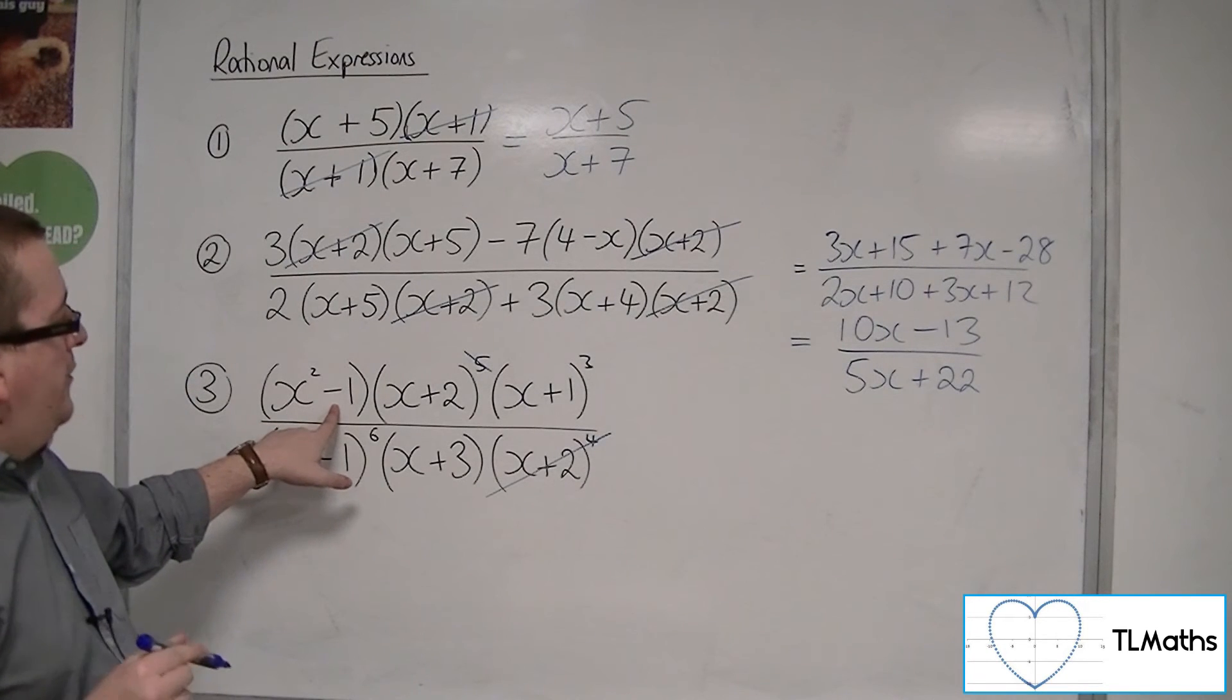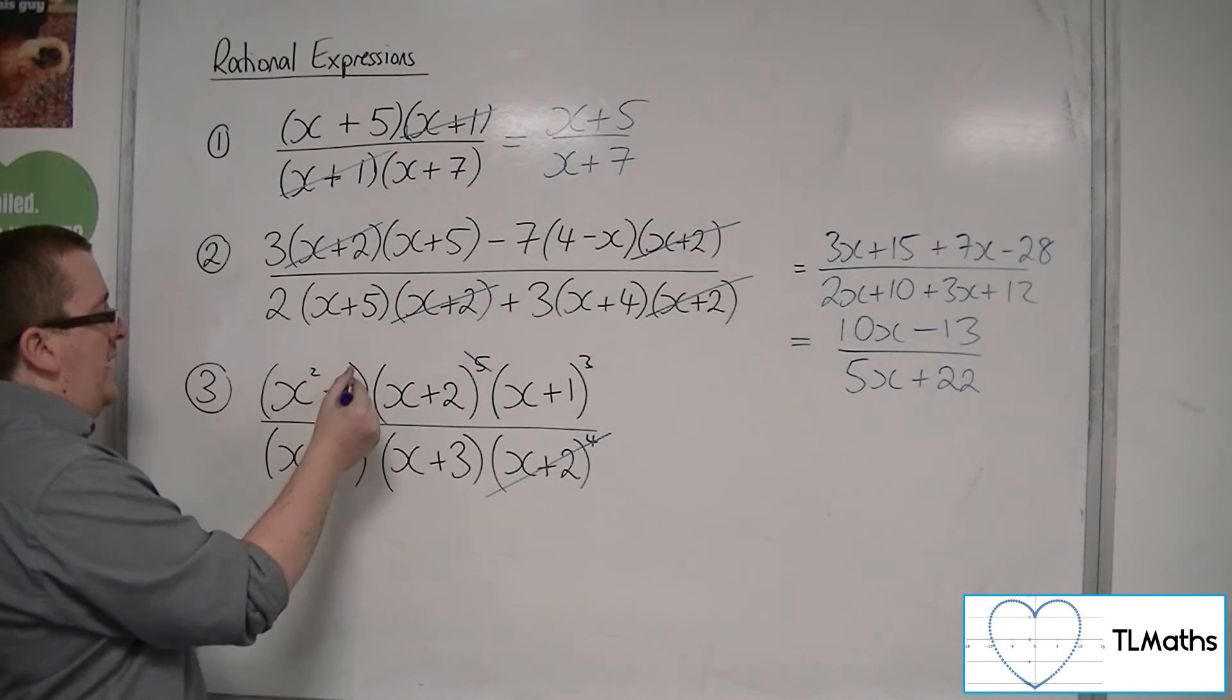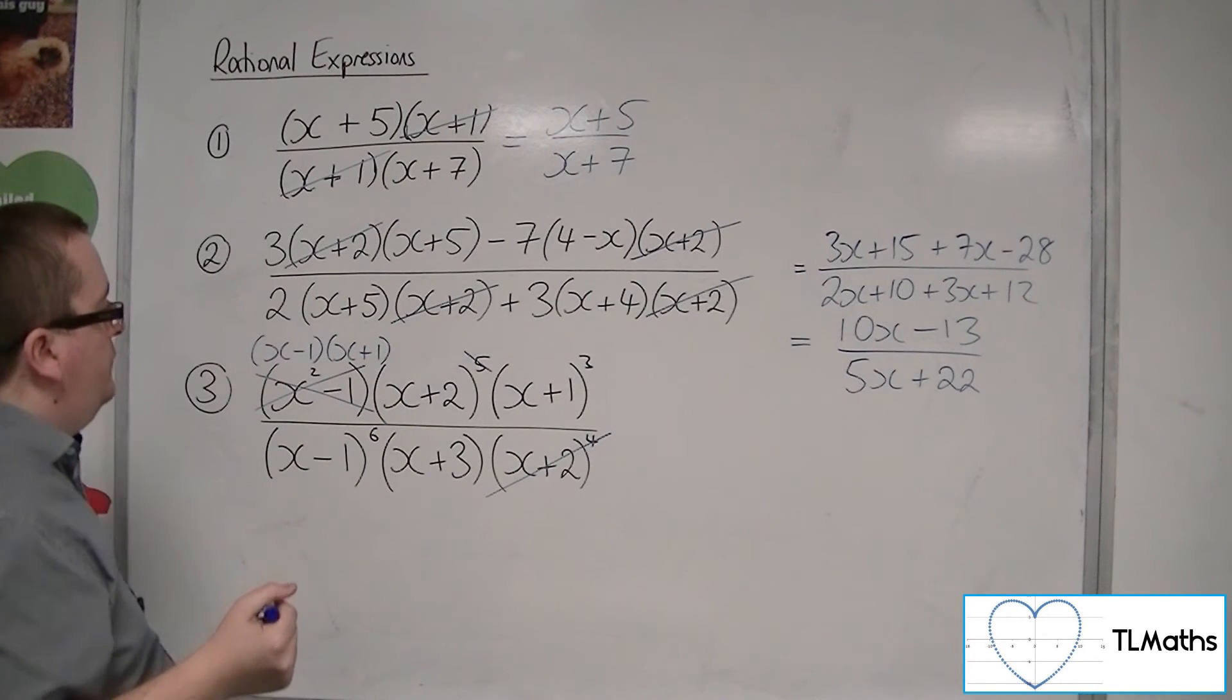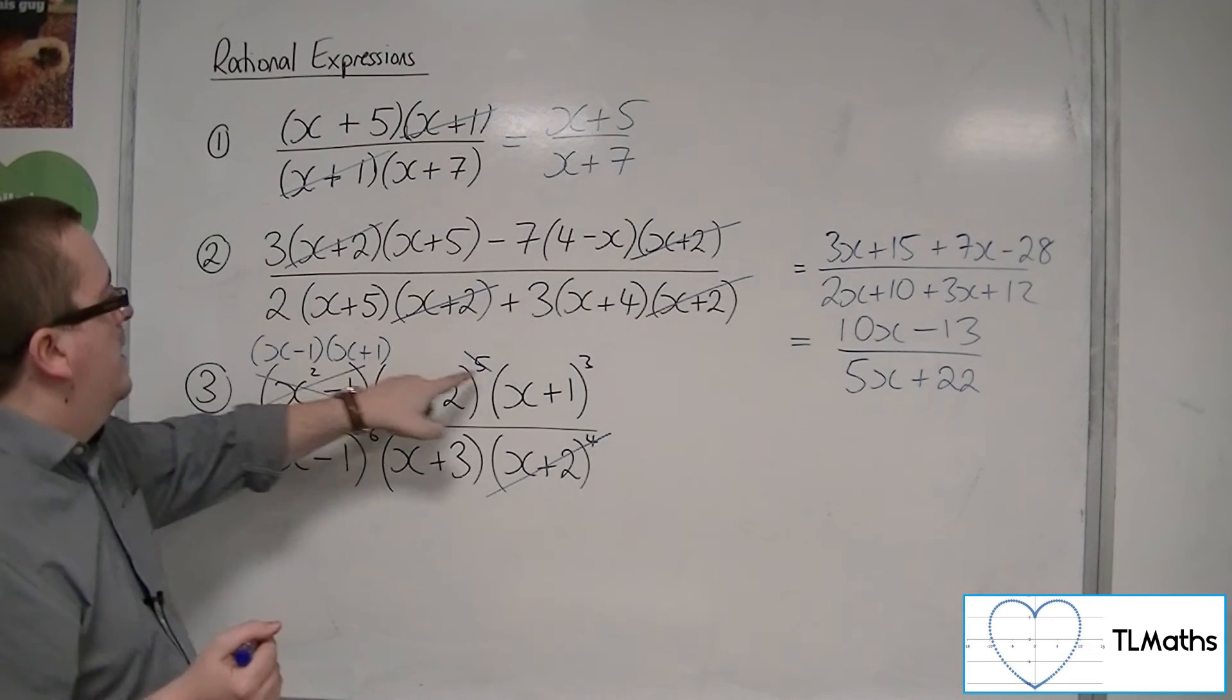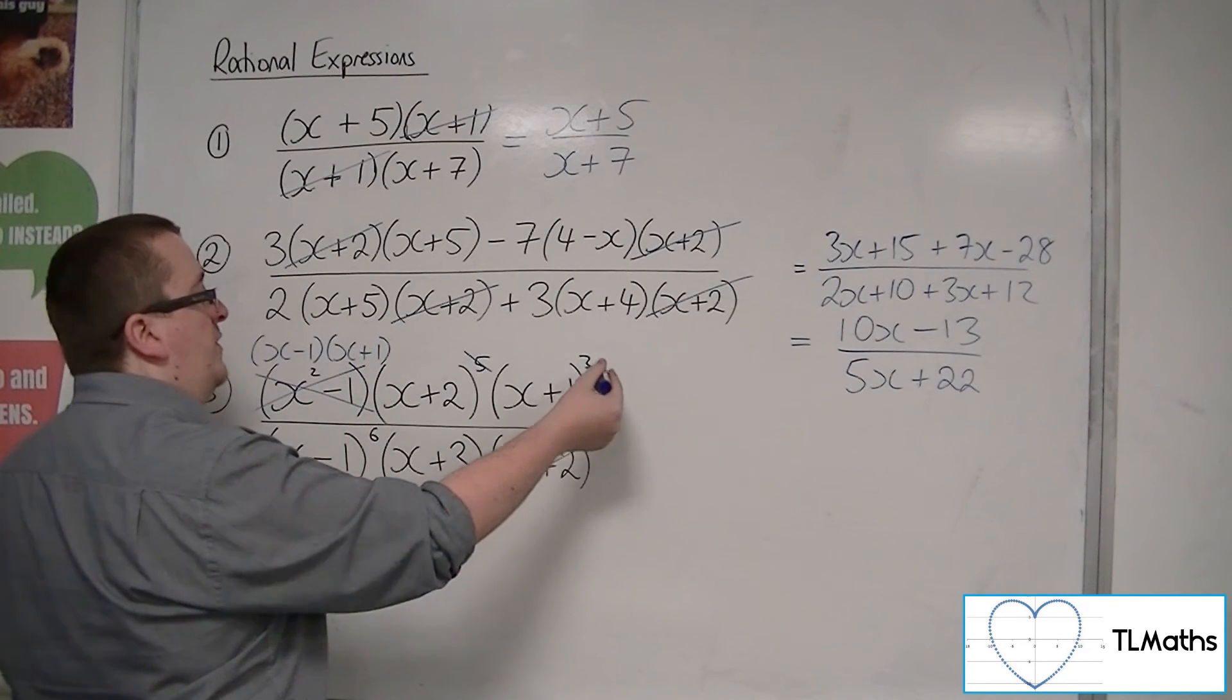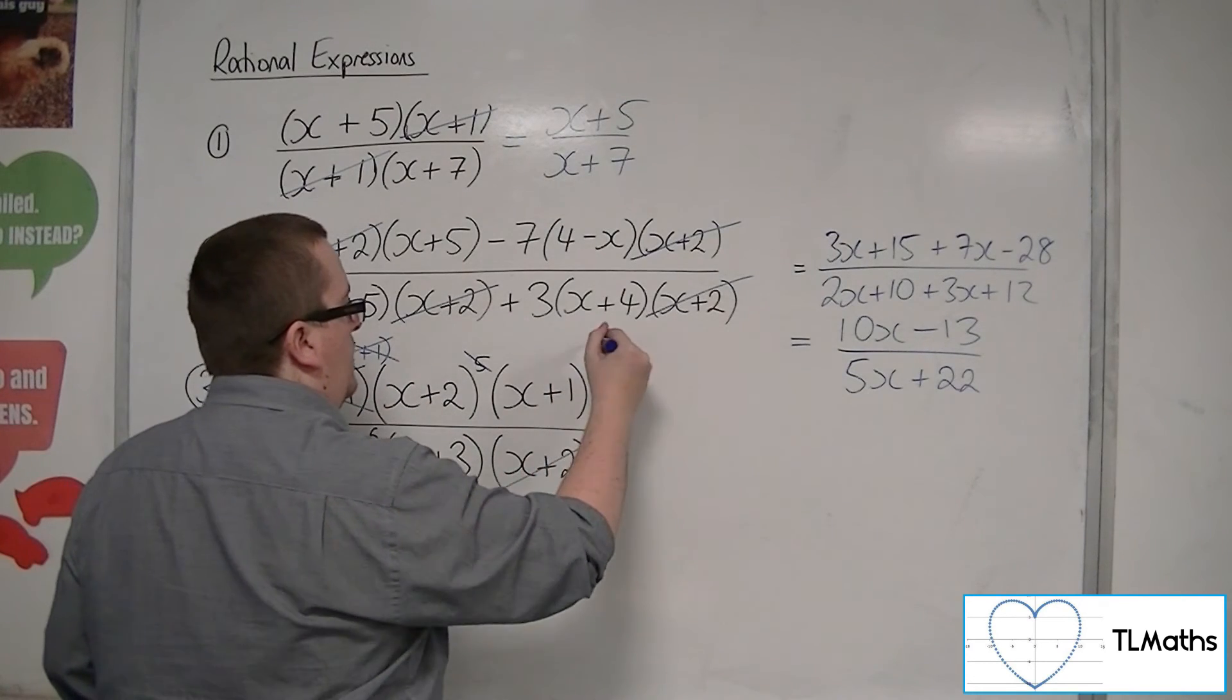Now, the x squared minus 1, that is the difference of 2 squares. So, I can actually rewrite that as x minus 1, x plus 1. So, I actually have x plus 1 times x plus 1 to the 3 in the numerator. So, that's x plus 1 to the 1 times x plus 1 to the 3. So, I have x plus 1 to the 4 in the numerator. So, ignore that one, and I can bring that up to 4.